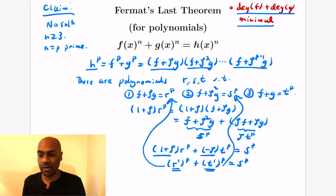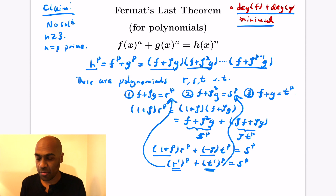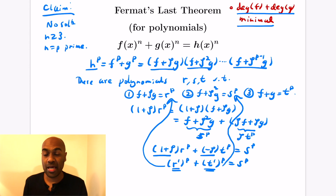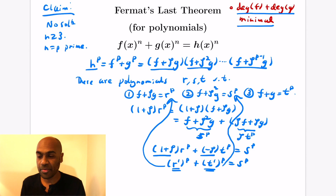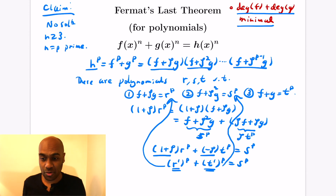Where did the condition p ≥ 3 come in? We needed at least three distinct factors in the factorization of f^p + g^p, which requires p ≥ 3, and the degree argument also relies on p > 3. So this is a really cool proof of Fermat's Last Theorem extended to polynomials — shocking because the integer case required Andrew Wiles seven years, while the polynomial case can be proved in a short video.